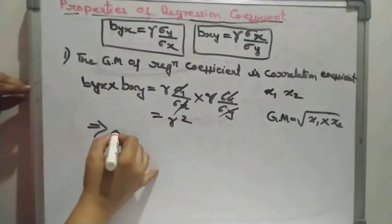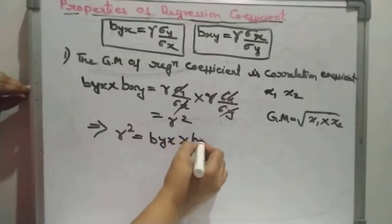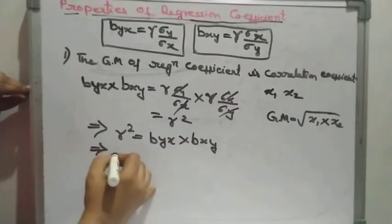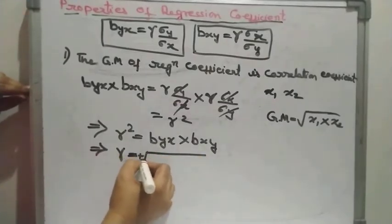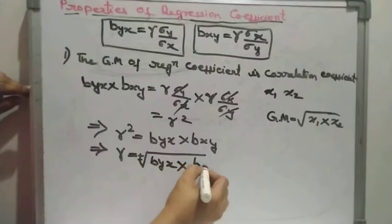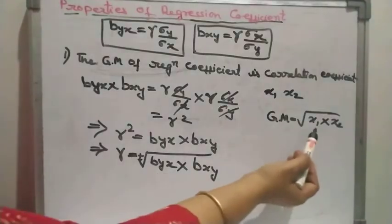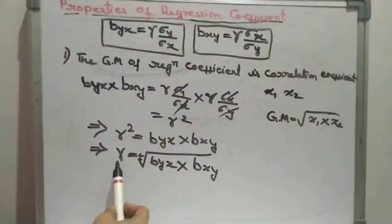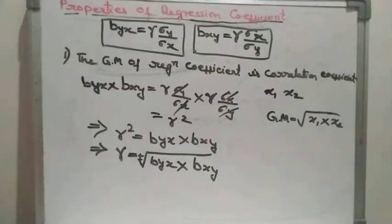The σ_x and σ_y terms cancel out, leaving r². So it implies that r² = b_yx · b_xy, which means ρ = ±√(b_yx · b_xy). This is in the geometric mean formula, so the geometric mean of the two regression coefficients is the correlation coefficient. Hence the proof.